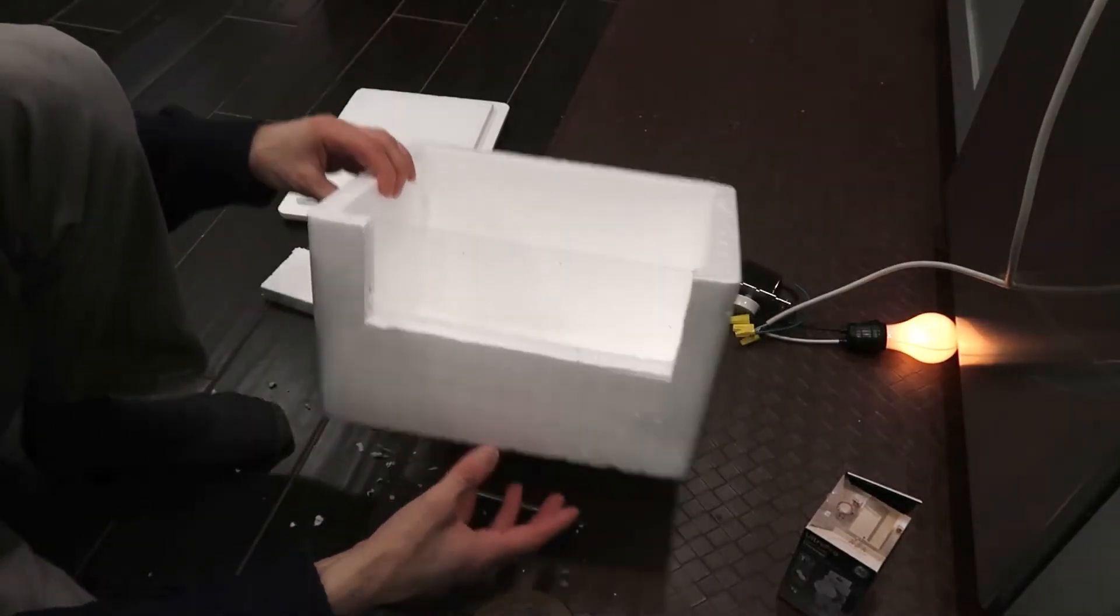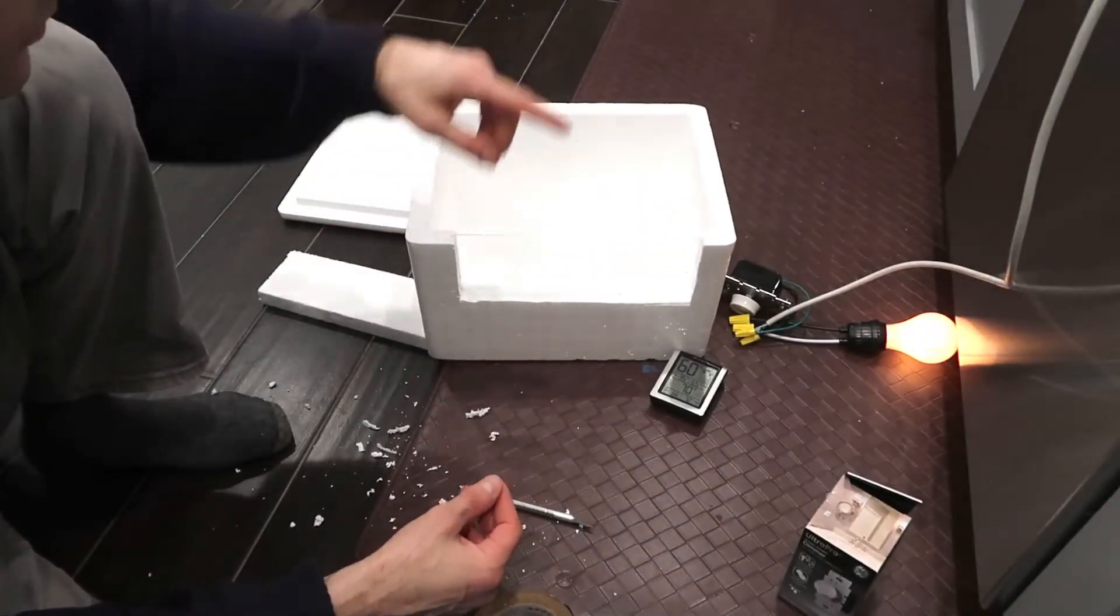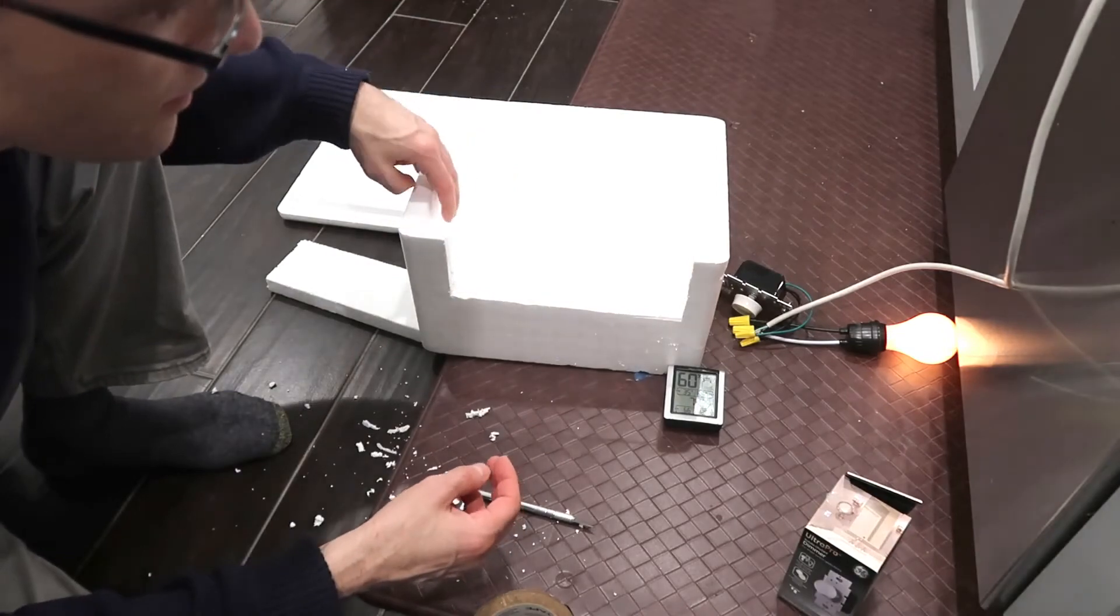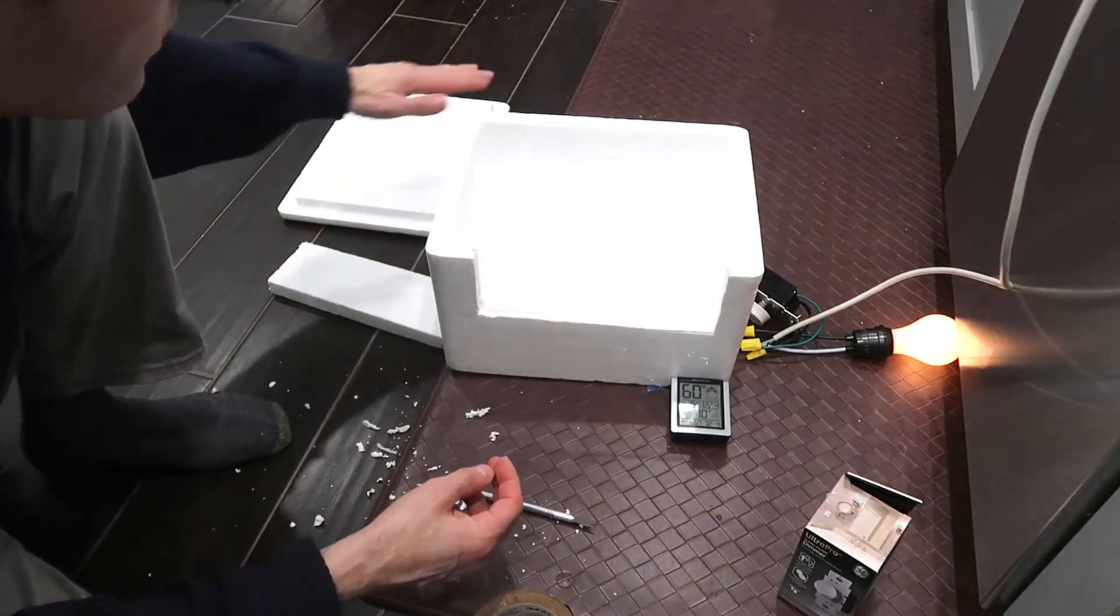The next step is tape it and then we're going to cut a hole for this light bulb. We'll probably put the light bulb in the side just so that it stays there when you take the lid off.